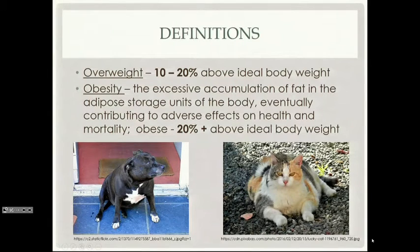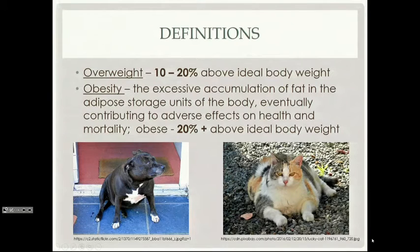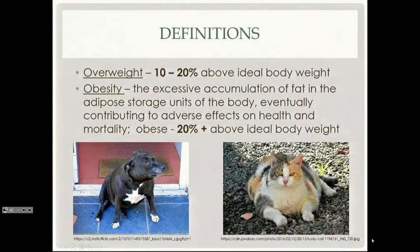Obesity is technically defined as 20% above that ideal body weight and over. Some texts say 25%, but for this class we're going to use 20%. Obesity is the excessive accumulation of fat in the adipose storage units of the body, eventually contributing to adverse effects on health and mortality. The animal simply has more fat than it should — we're not judging the reason behind it.